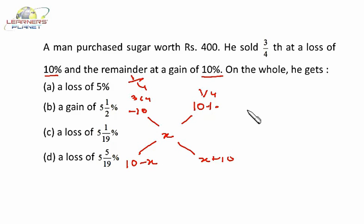So X is the overall profit or loss. So 10 minus X upon X plus 10 is equal to this ratio, that is 3 by 4 to 1 by 4, or we can say 3 by 4 divided by 1 by 4, that is 3.